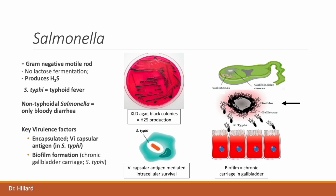Salmonella species are gram-negative motile rods with flagella. One memory device to remember this fact is that salmon swim. Although Salmonella does not ferment lactose like E. coli, they do produce hydrogen sulfide gas. Here is XLD agar, which differentially indicates bacterial colonies that produce hydrogen sulfide as black colonies. Of the Salmonella species, Salmonella typhi is responsible for typhoid fever, while non-typhoidal serotypes present only with bloody diarrhea without the findings typical of typhoid fever. It should be noted that Salmonella paratyphi can also cause typhoid symptomatology but results in a less severe infection.